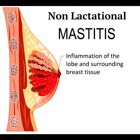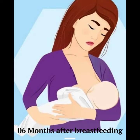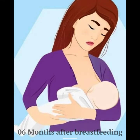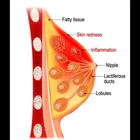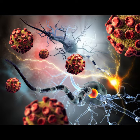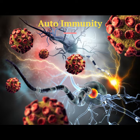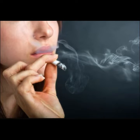Non-lactational mastitis is the inflammation of the breast tissue in a nulliparous woman, or occurring in a breastfeeding mother after a minimum of six months after cessation of lactation. Periductal mastitis is a chronic non-lactational inflammation around the major milk ducts. The pathogenesis is obscure and thought to be autoimmune in nature. The condition is much more common in smokers.